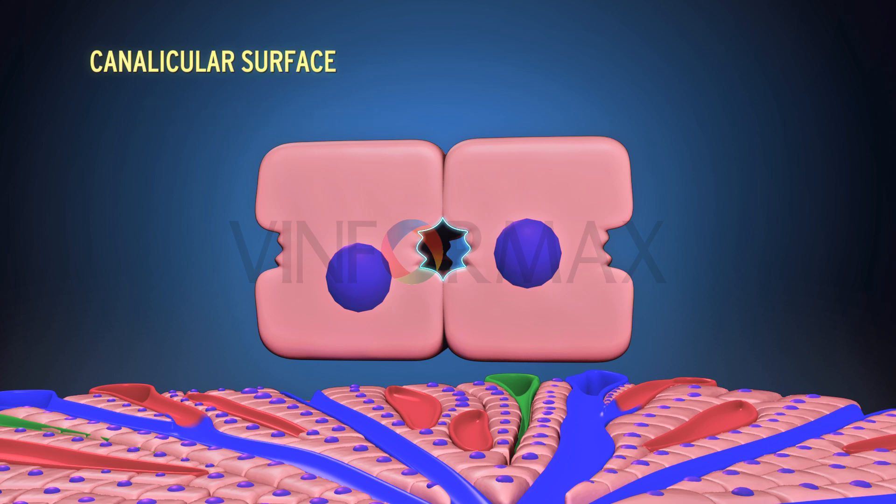The canalicular surface: bile secreted by liver cells is poured into bile canaliculi. These bile canaliculi are spaces present between the cell membranes of adjacent hepatocytes. The canalicular surface of hepatocytes shows longitudinal depressions which form the wall of a bile canaliculus. Irregular microvilli project into the canaliculus.